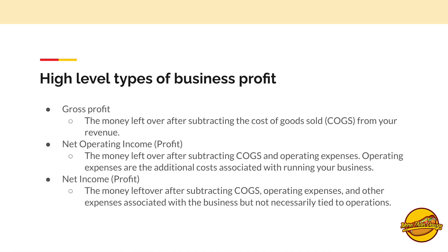Then we have net income, which is just one level deeper. It's the money left over after subtracting your cost of goods sold, your operating expenses, and other expenses associated with the business but not necessarily tied to operating. Both of those terms are all profit — they're just different fancy versions of profit layered deeply so you can see different forms of profit.